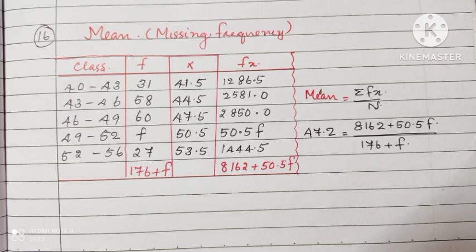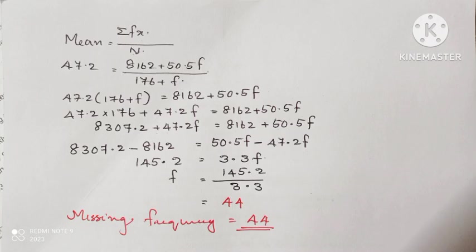For finding mean, we can use any formula. I am using the formula: mean equals fx by n. Substituting each value for sigma fx, n and mean. Mean is given in the question, that is 47.2. And all values substituting, cross multiplying, simplifying, we will get f equals 44. Therefore, the missing frequency is 44.